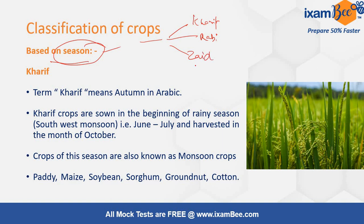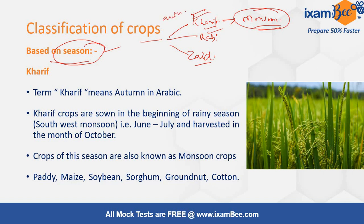What are Kharif crops? The Kharif crops are mainly the crops which are grown in the rainy season — the monsoon crops are the Kharif crops. This word Kharif in Arabic means autumn, while these crops are known by the name monsoon crops.